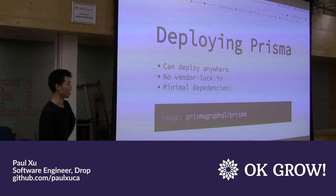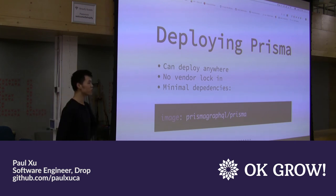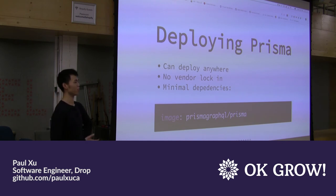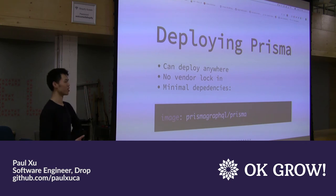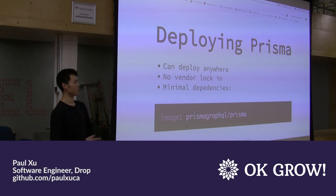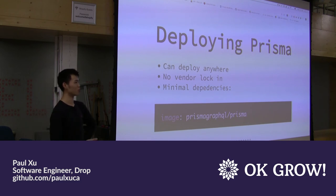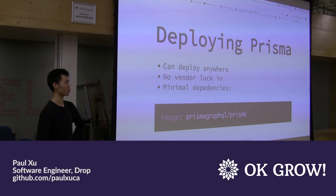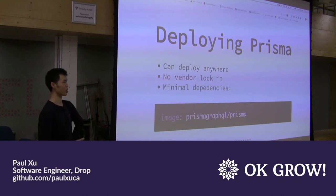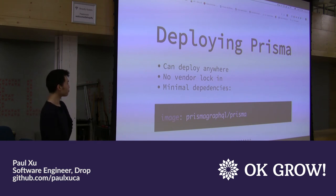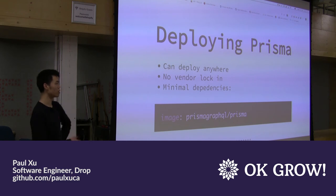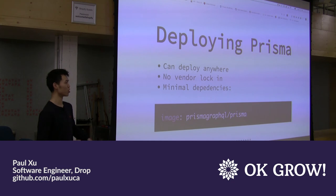One concern people have about Prisma is vendor lock-in — if you start using Prisma, are you stuck if they stop maintaining it? The answer is no. Underneath it all is still your database — all the data is intact. Rather than using Prisma, you can start writing ORM code or raw SQL if Prisma ever stops serving your needs. You can deploy Prisma anywhere; it has minimal dependencies, all living in one Docker image, making it quite flexible.